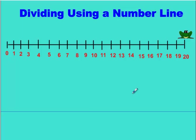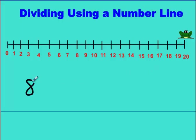Have you ever wondered how to divide numbers using a number line? In this lesson, I'm going to show you exactly how to do that using nothing more than a number line and a frog. Let's look at how it's done. Let's say we have two numbers — 8 divided by 2 — and we have to use a number line, and that's the only thing we're allowed to use to figure out the answer.